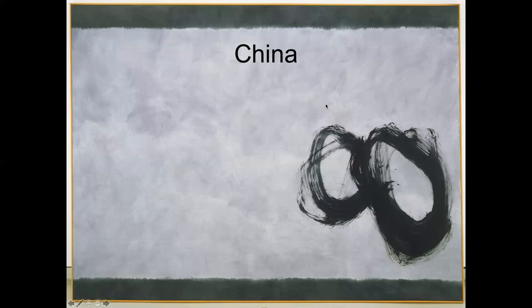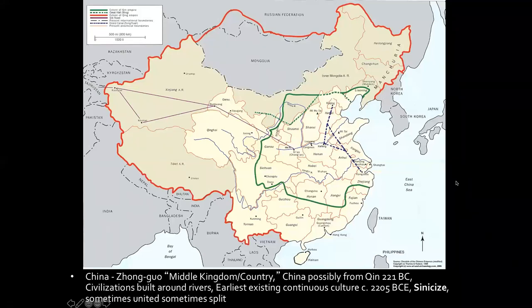A helpful way to think about China is not as a country defined by ethnicity, like you'd see in European countries such as Poland. Instead, think of it as an empire — and it's always been an empire. In the third century BC, China was united, and from that point on it remained an empire, sometimes expanding, sometimes contracting. A good way to think about it, if you're familiar with Western history, is to imagine the Roman Empire and imagine that it had never fallen. That is China.